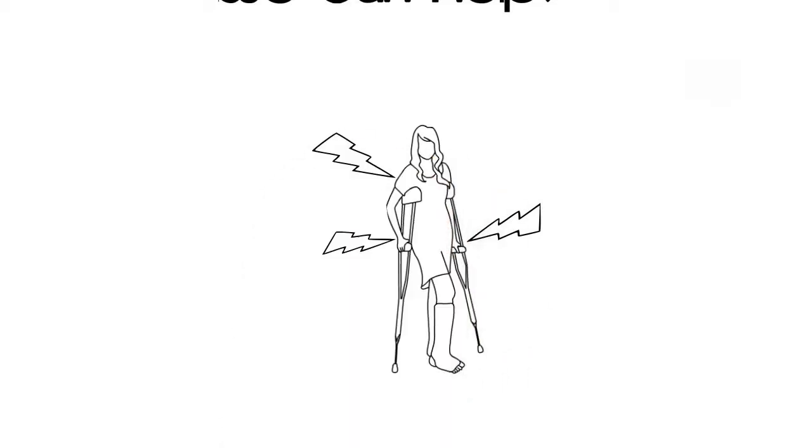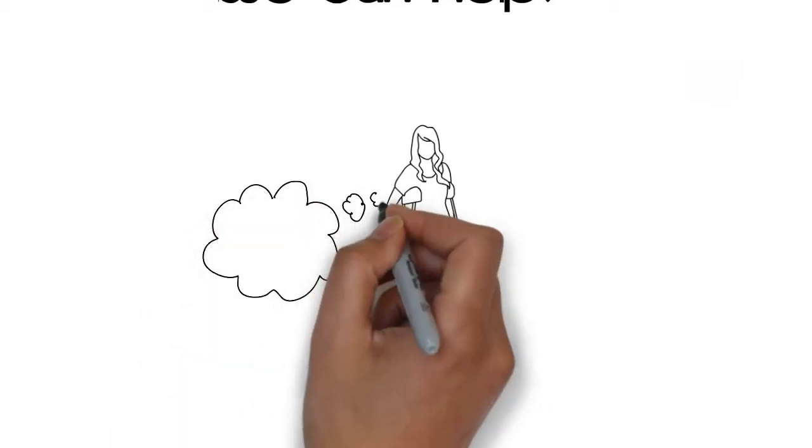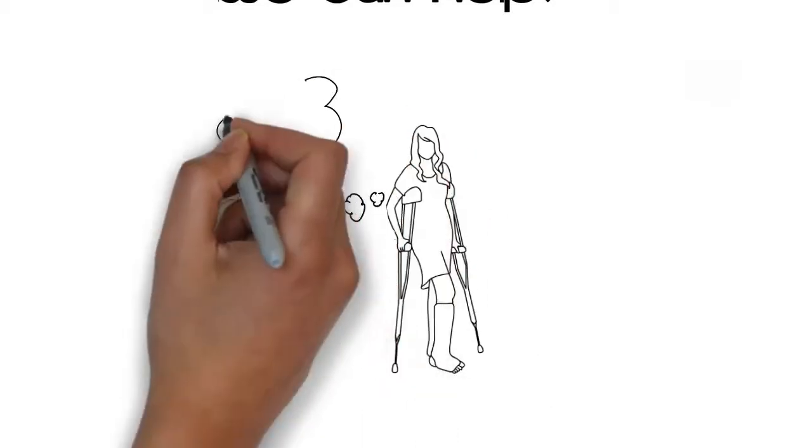They hurt her hands, wrists, and underarms. And it was exhausting to move around. Even worse, she couldn't use her hands and arms anymore. Using crutches kept her from doing almost anything.